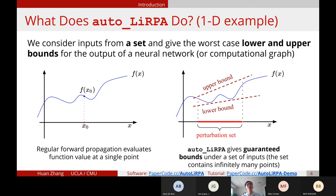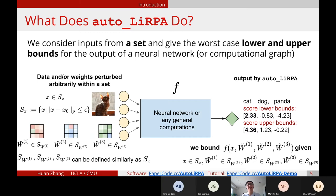In the verification setting, we need to consider a set of inputs and we want to give the lower and upper bounds of the function. That is exactly what our framework does. We do it on a general computational graph defined in PyTorch. You give perturbation sets as input to the graph, and we give you the lower and upper bounds for the output.